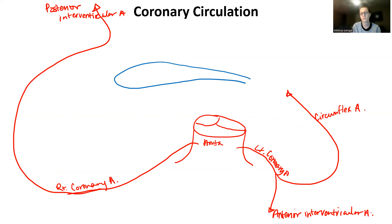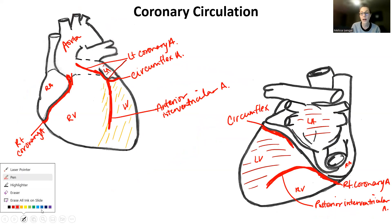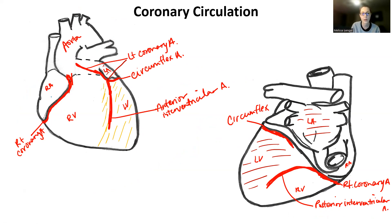So that's how it's supplying — that nice map. Now you have to understand that oxygen got sent to the myocardium, and now we have to pick up carbon dioxide. The carbon dioxide is going to be picked up in the vein system, so most of the arteries will have a parallel vein, though there will be some that don't.